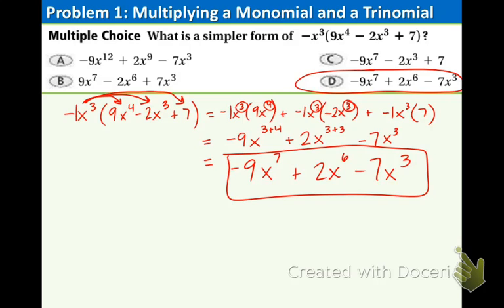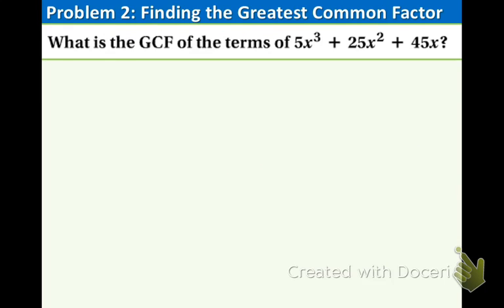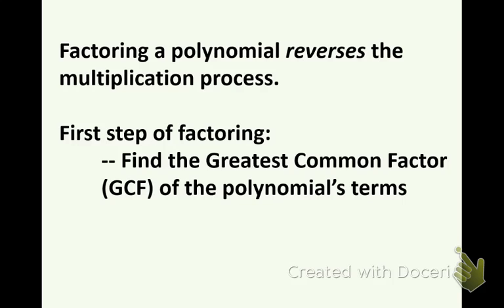We just used the distributive property to multiply a monomial by a polynomial. Now we are going to learn how to factor — and I know you have been introduced to this last year. Factoring a polynomial reverses the multiplication process; it is going in the exact opposite direction of distributing. It is sometimes called undistributing. The first step of factoring is to find the GCF, the greatest common factor. In example 2, we are going to practice finding the GCF of a polynomial.